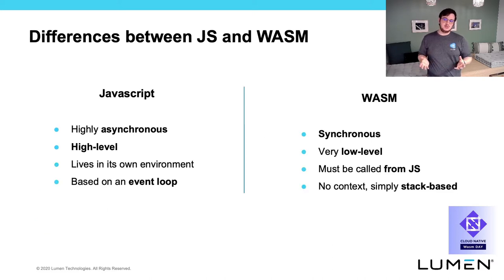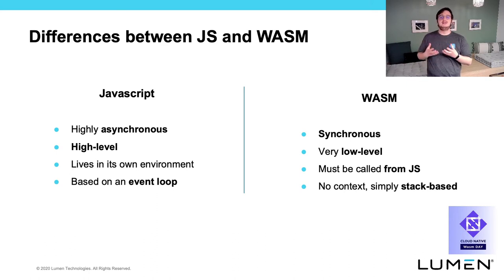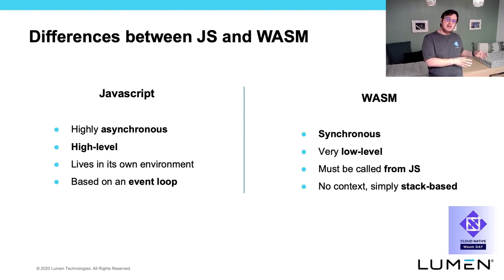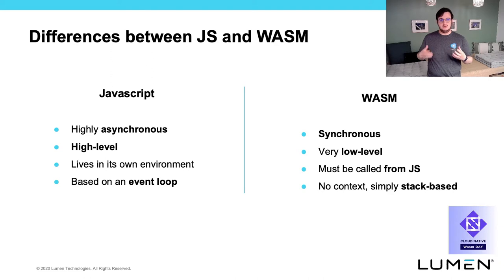Now let's dive into the technical side. JavaScript and Wasm have pretty different paradigms. On one side, JavaScript is an interpreted, high-level language — strongly asynchronous and internally based on an event loop. It's very popular and deeply integrated in modern browsers. On the other side, Wasm is presented as the web equivalent of native assembly language. It's a very low-level language targeting a stack-based virtual machine, and it's designed to be called from JavaScript in a synchronous manner. These main differences have strong implications on how you should approach your codebase design.